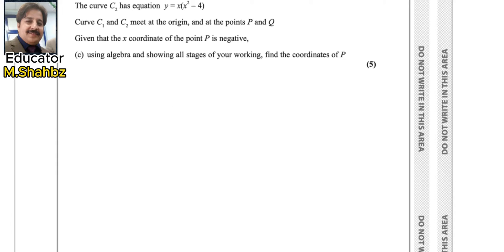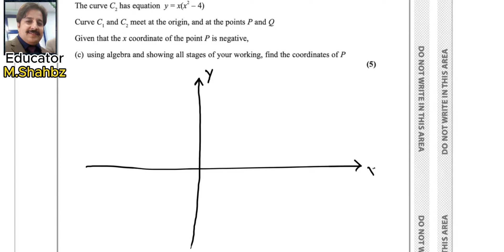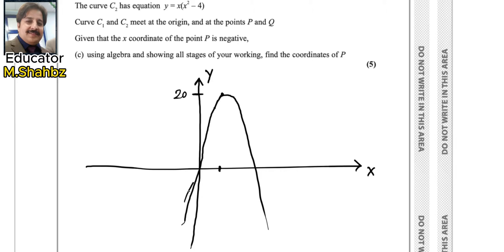First of all you need to draw the x-axis and y-axis. Now you need to mark the maximum point — it is at (2, 20), so 2 will be somewhere here. You will draw an N-shaped graph, and this is the maximum point, so it goes like this. You can draw better — sorry, my drawing is not too good, but it will be accepted.